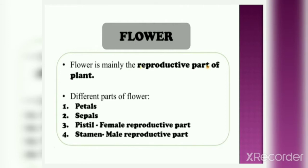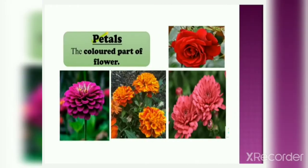We will now study about each of these parts in detail. Let's start with the petal first. The colored part of flower are called flower petals. You can see in the picture, and you also have seen flowers of different colors — these colored parts of flowers are called petals.